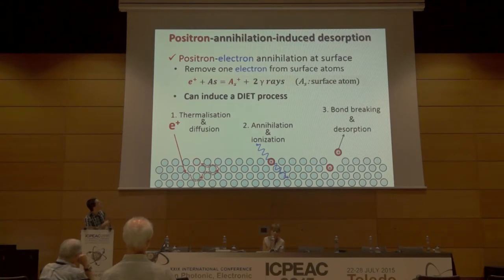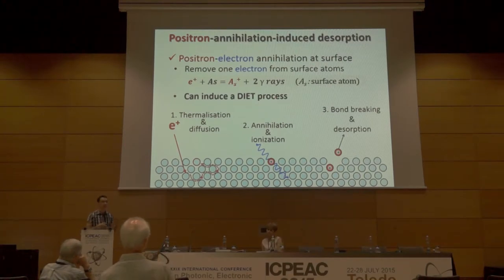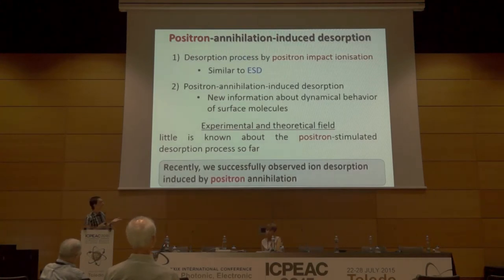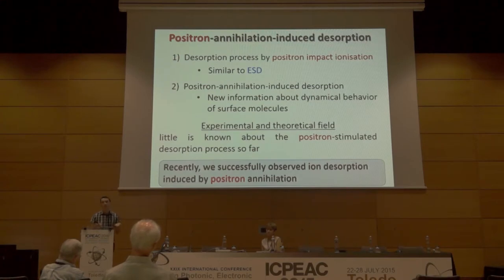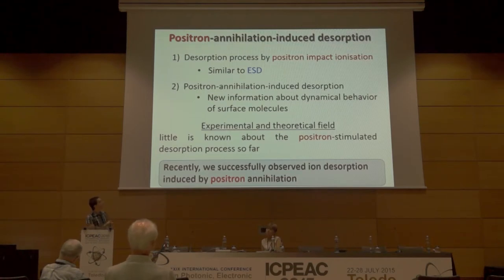As a consequence of the annihilation, two gamma rays are produced. As a result, positrons can induce a similar DIET process to electrons, and O+ ions can also be desorbed. However, for positrons there are two desorption processes that can occur: one is similar to electron-stimulated desorption via positron impact ionization, and the other is desorption induced by positron annihilation with an electron on the surface. New information can be inferred from this second process.